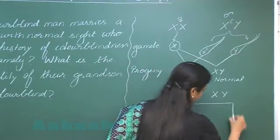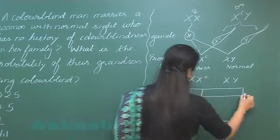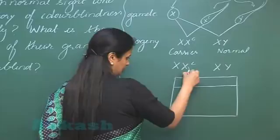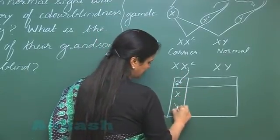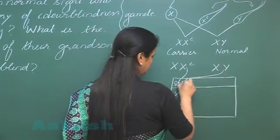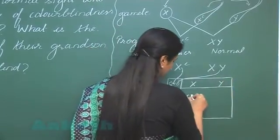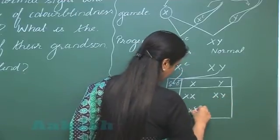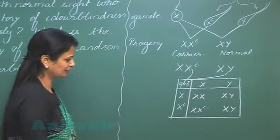We can make a Punnett square to find the zygotic combination. The female can produce two types of gametes. The male will produce two types of gametes. After fertilization, the following types of zygotes can be produced.